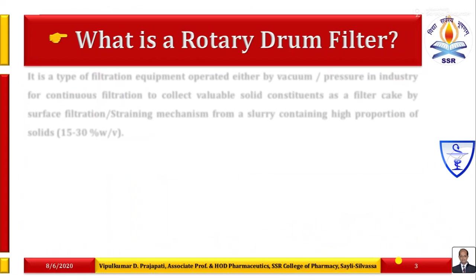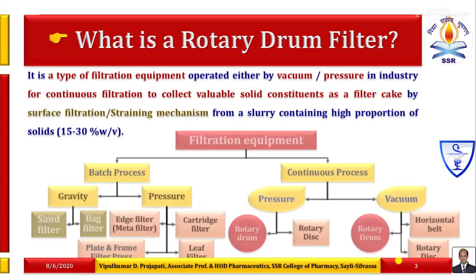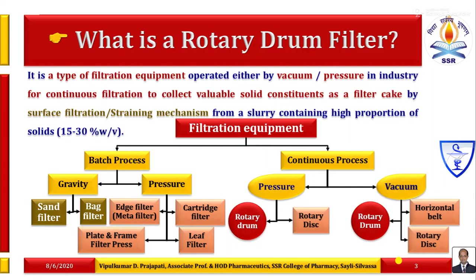What is a Rotary Drum Filter? It is a type of filtration equipment operated either by vacuum or pressure in industry for continuous filtration operation, to collect valuable solid constituents as a filter cake by surface filtration or straining mechanism from a slurry containing a high proportion of solids — between 15 to 30 percent weight by volume. It falls under the continuous process driving force, either pressure or vacuum, but mostly it works under vacuum.